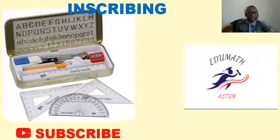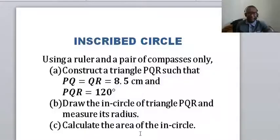Inscribing simply means drawing a circle inside the triangle such that it touches the three sides of the triangle internally. So let's get started with this guiding question. Using a ruler and a pair of compasses only, construct a triangle PQR such that PQ is equal to QR and everything is equal to 8.5 centimeters, and the angle Q is 120 degrees.